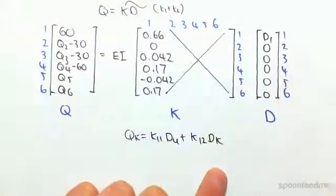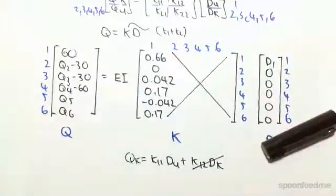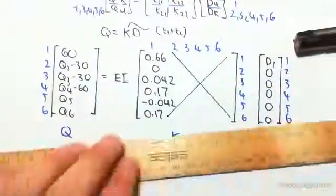That would be q known, this would be q unknown, this would be k11.